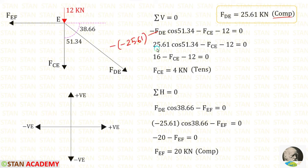Now let us apply the rule sigma H equals 0 at joint E. We have one horizontal force and one inclined force. We make FDE horizontal by multiplying with cos 38.66. When made horizontal, FDE acts towards the right side, so it is positive. FEF is acting towards the left side, so it is negative. FDE is compressive, so it is applied as negative. Finally, FEF gives a negative value, meaning it is compressive.